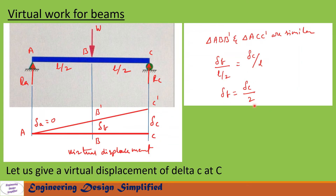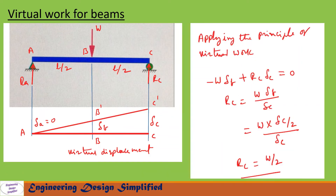Now let us write the virtual work equation: minus W into delta_B, where the minus sign is because delta_B is in the upward direction and W is acting in the downward direction, so work is negative. Then plus RC into delta_C, since RC is acting vertically upwards and the deflection is also upwards.